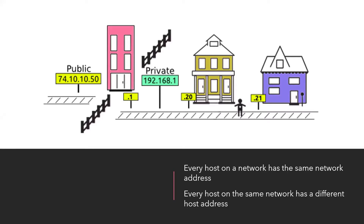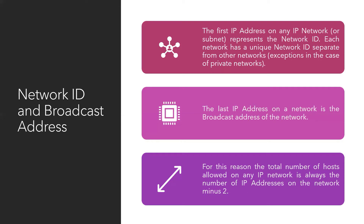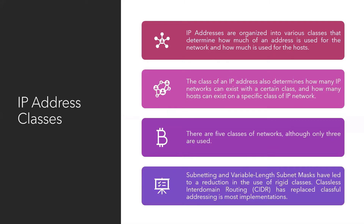Every host on the same network has the same network address, and every host on the same network must have a different host address. Every network has a network ID and a broadcast address. The first address in an IP subnet represents the network ID — each subnet has a unique network ID. The last IP address in the range is the broadcast address. For this reason, the total number of usable hosts on any IP network is always the total number of IP addresses minus two.